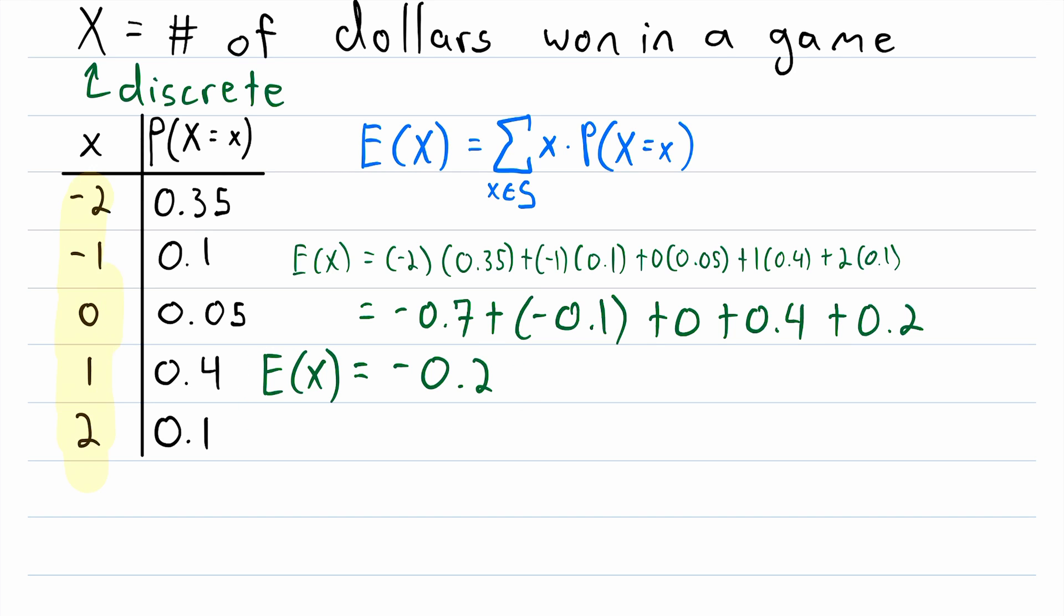You might notice that negative 0.2 isn't a possible outcome for our random variable. So how could that possibly be the expected value? Well, that's an important thing to notice because it brings our attention to the fact that the expected value doesn't so much tell us what we would expect to happen in one trial,